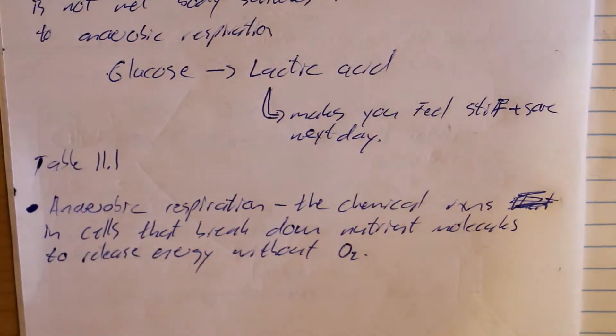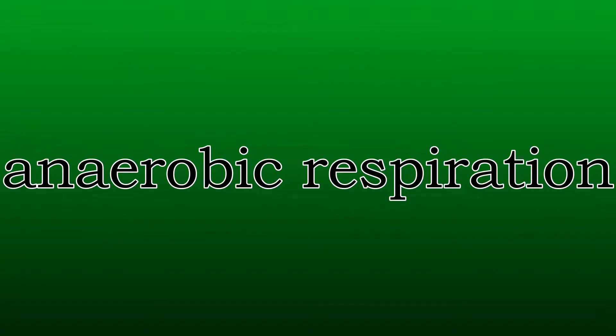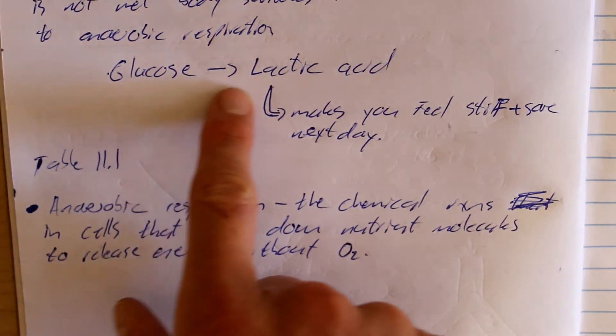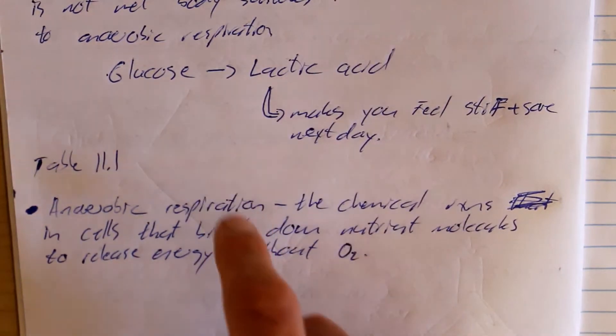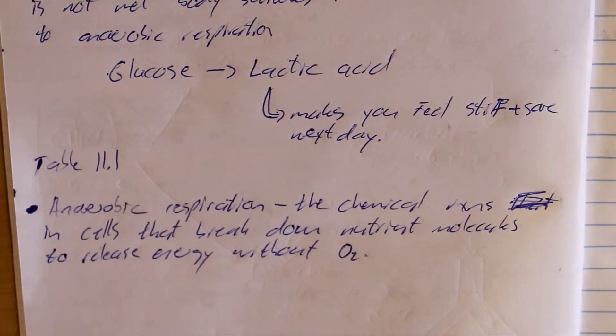If athletes train intensely and oxygen demand is not met, the body switches from aerobic respiration to anaerobic respiration. This is where glucose gets converted and lactic acid is produced. If athletes train really intensely and exceed the oxygen demand — the amount of oxygen they can breathe in — they switch from aerobic to anaerobic respiration. However, this is not efficient, and it results in lactic acid which makes you feel stiff and sore.